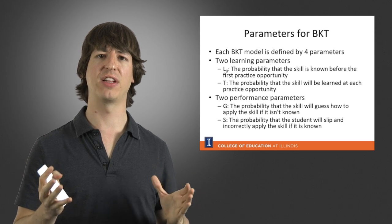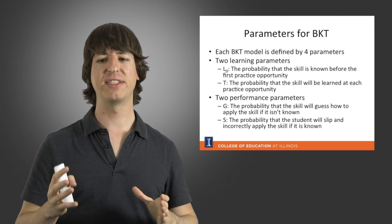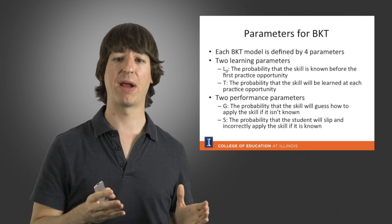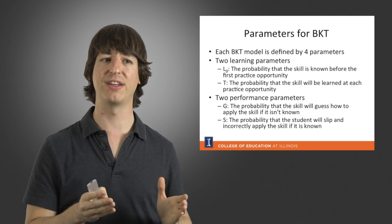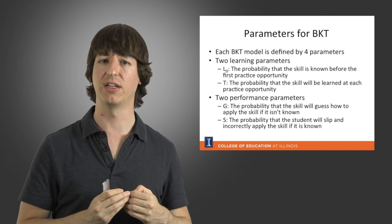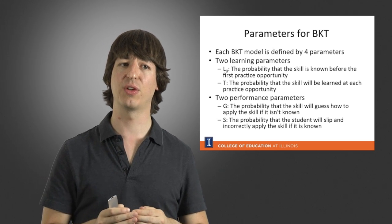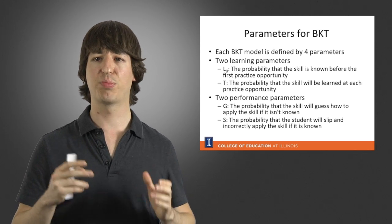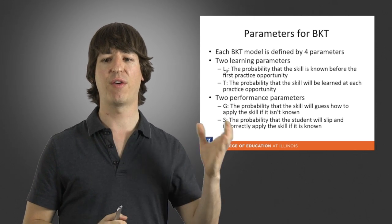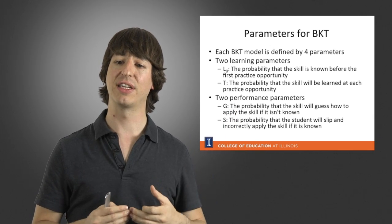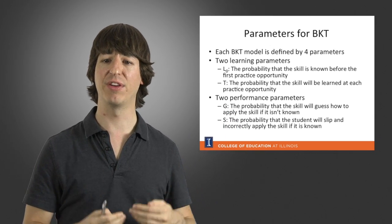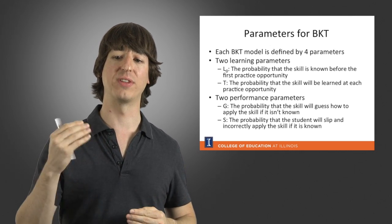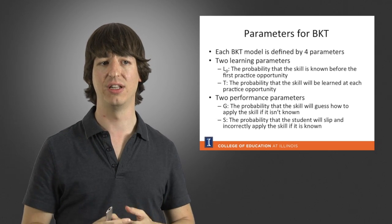As a quick summary, each Bayesian knowledge tracing model is defined by four parameters. Two are learning parameters: L0, the probability that the skill is known before the student starts practicing, and T, the probability that the student will transition from the not-learned state to the learned state. There are also two performance parameters: G, the probability that the student guesses the correct answer even when they don't know the skill, and S, the probability that the student slips and gets the incorrect answer even though they know the skill.